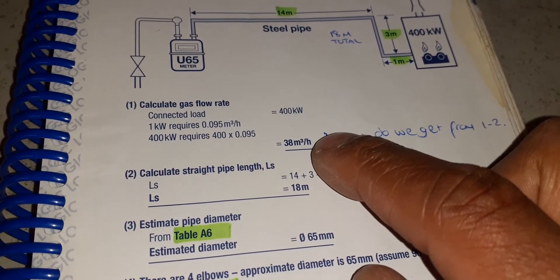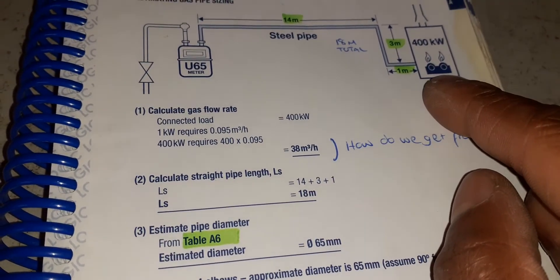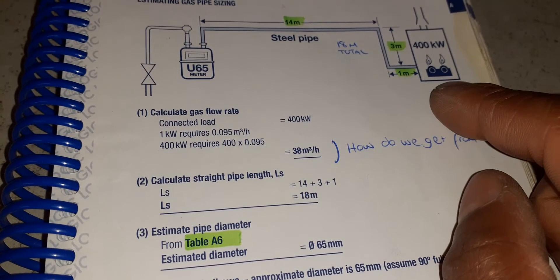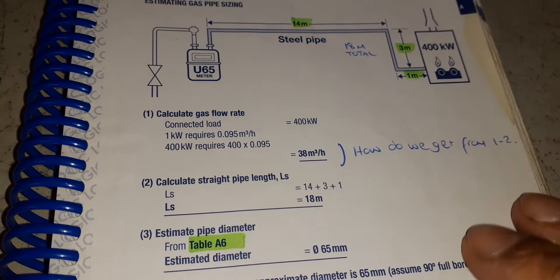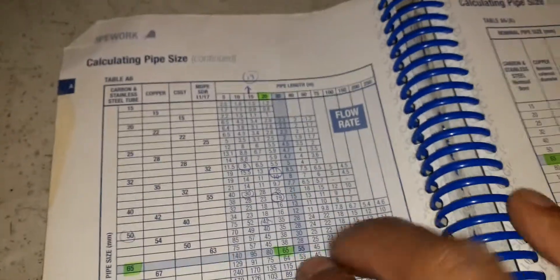So that will give us our flow rate that is required to provide a 400 kilowatt boiler with adequate gas. That will let us know the size of pipe we need depending on our pipe run. We turn over the page and it shows you here...